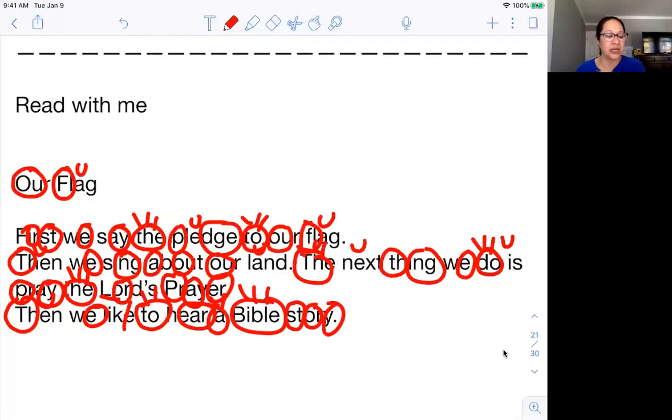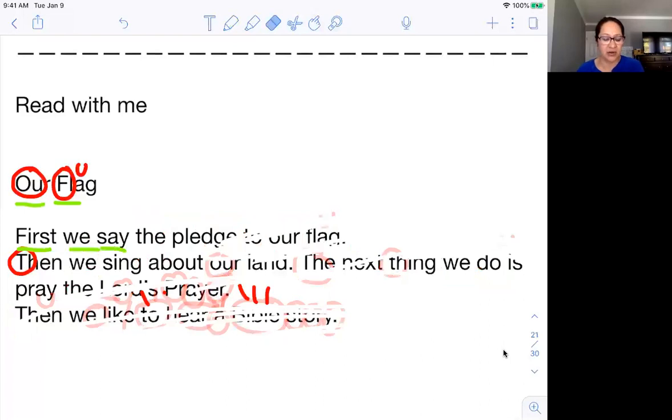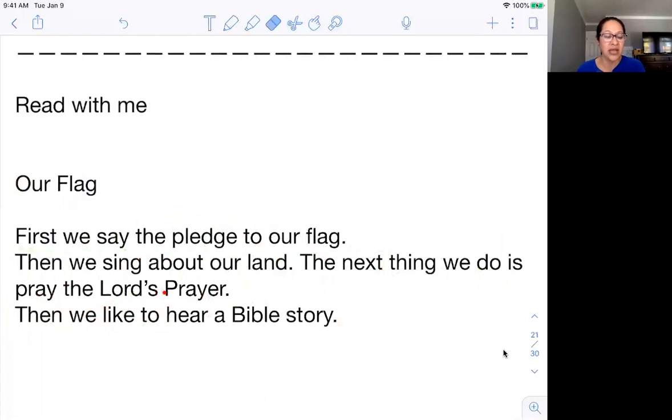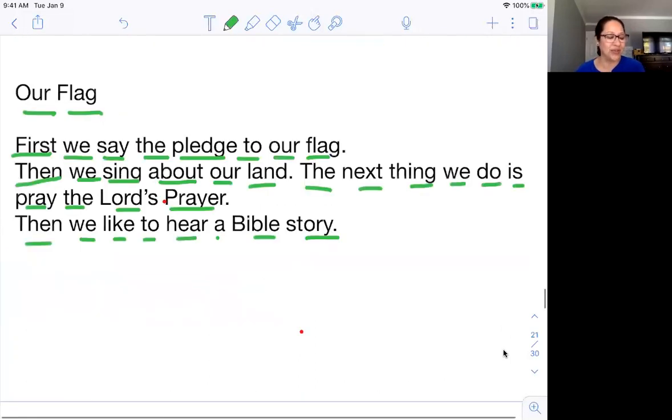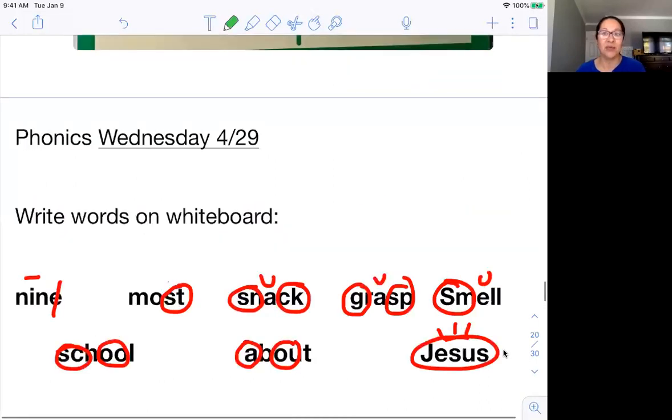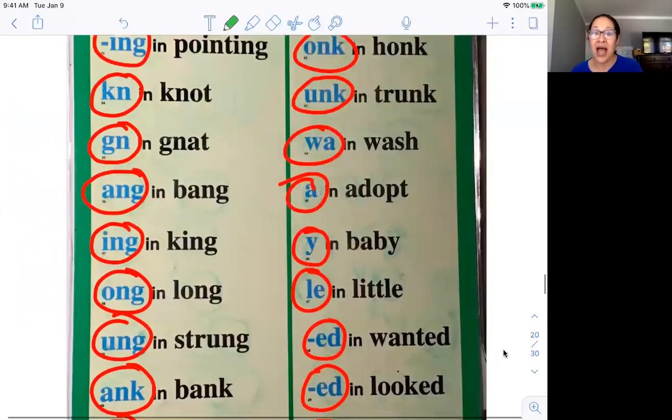Let's go back and read that. I'll go ahead and choose green. Our flag. First we say the pledge. Why don't I go ahead and erase it? You don't need to mark it with me. It's just you can read it together, okay boys and girls. Let me erase that. I will go ahead and underline as I read. Read it with me please. Our flag. First we say the pledge to our flag, period, right. And we start with a capital letter. Then we sing about our land. The next thing we do is pray the Lord's prayer. Then we like to hear a Bible story. Do you like to hear the Bible stories? I'm sure you do. I know that you do. It's fun to do that right, boys and girls.